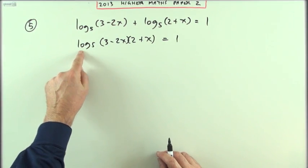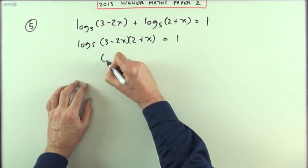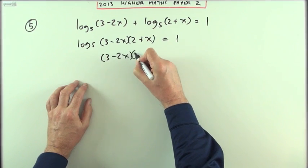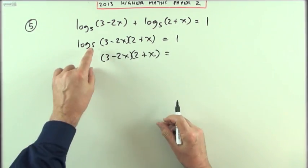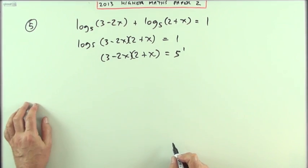Now that it just says log of something, I can get rid of that log by applying its inverse to both sides. So I'll have my 3 minus 2x times 2 plus x equals inverse of log base 5 is exponential base 5, that's 5 to the power 1.